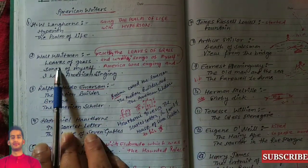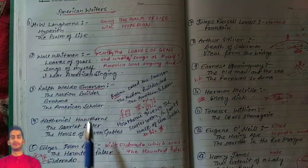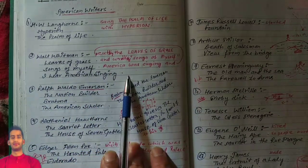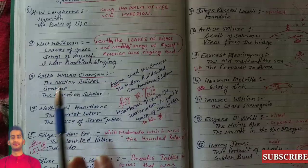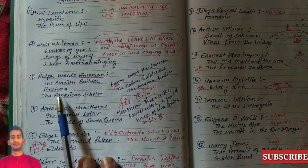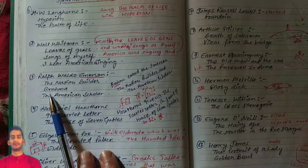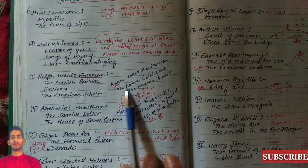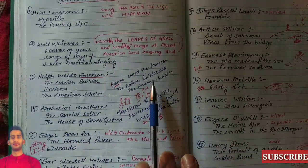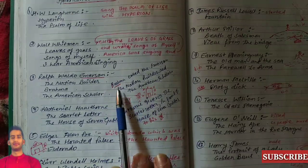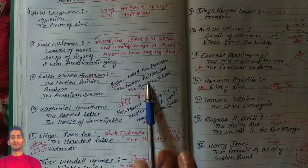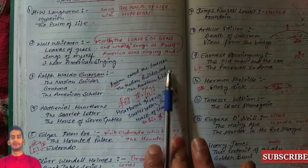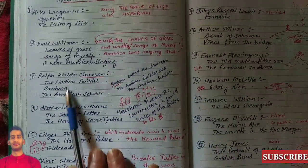Next one is Walt Whitman. The important works are Leaves of Grass, Song of Myself, and I Hear America Singing. Next one is Ralph Waldo Emerson — works include The Nation Building, Brahma, and The American Scholar. Here is a shortcut: Brahma called Emerson 'the nation builder' and 'the American scholar' — use this to remember his works.